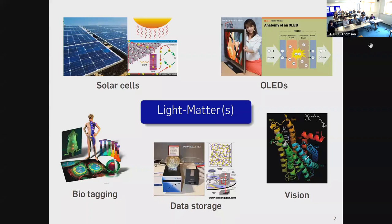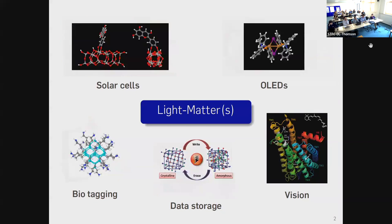In our eye we have proteins which undergo conformational change when they absorb light, and that leads to the process of vision — the rhodopsin family of proteins in the retina. Finally, you can also use materials to store information as zeros and ones for data storage. For example, rewritable optical discs, where you write information with a laser — the basic principle being a transition from an amorphous to a crystalline phase of some material.